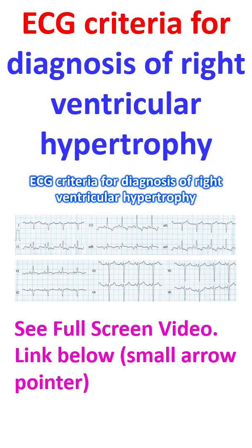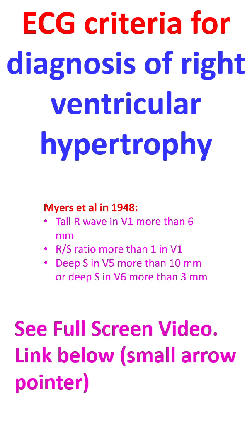ECG criteria for diagnosis of right ventricular hypertrophy are not as commonly used as those for left ventricular hypertrophy. One of the earliest sets of criteria were by Mayers et al in 1948: tall R wave in V1 more than 6 mm, R by S ratio more than 1 in V1, deep S in V5 more than 10 mm, or deep S in V6 more than 3 mm were proposed by them.